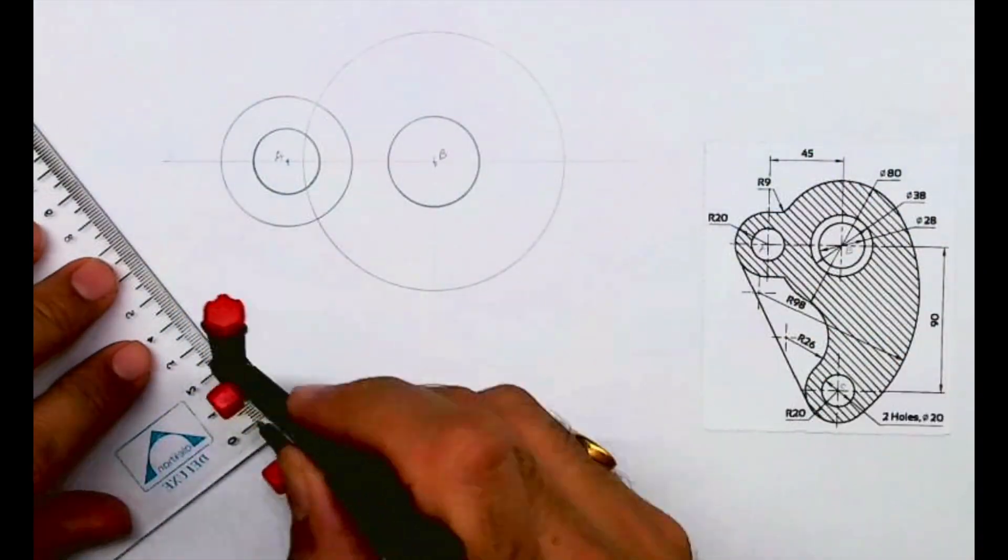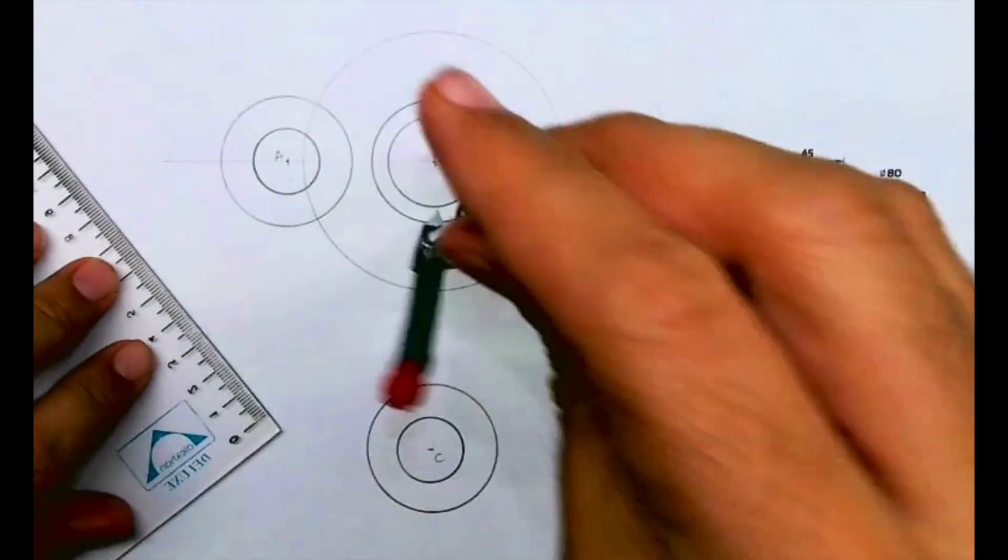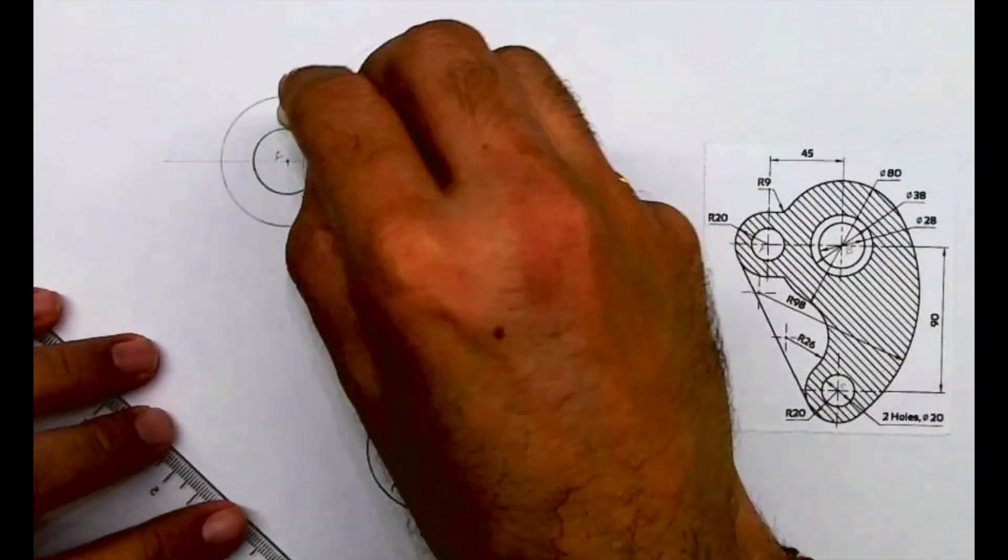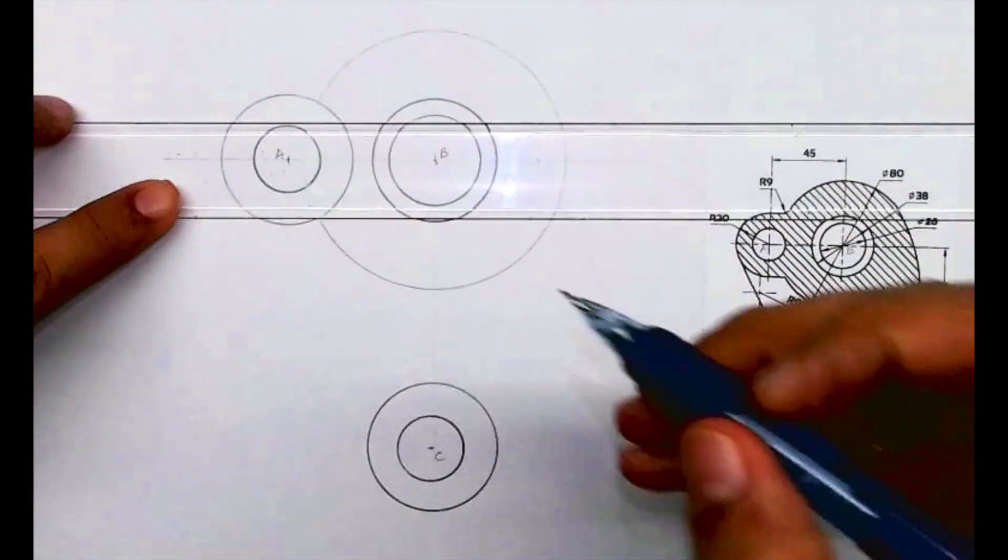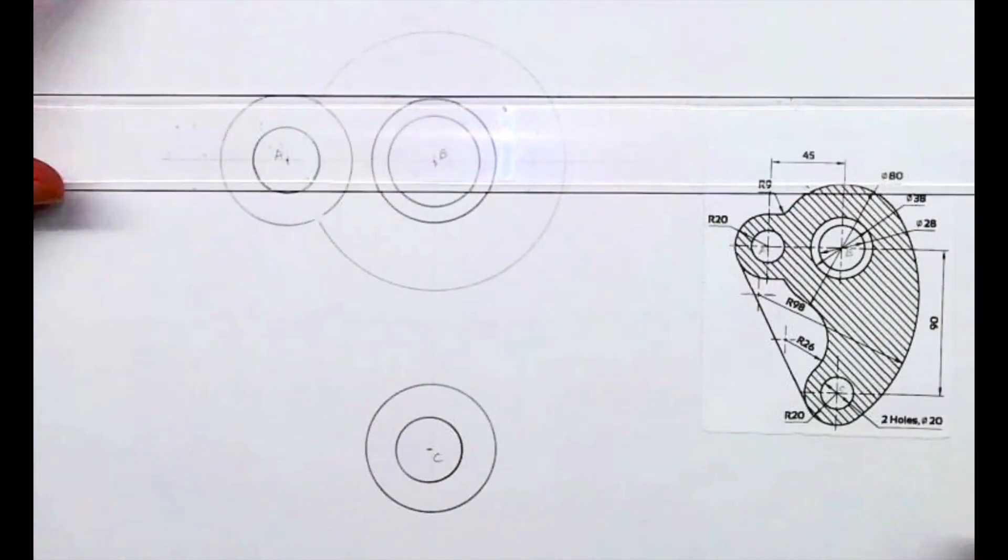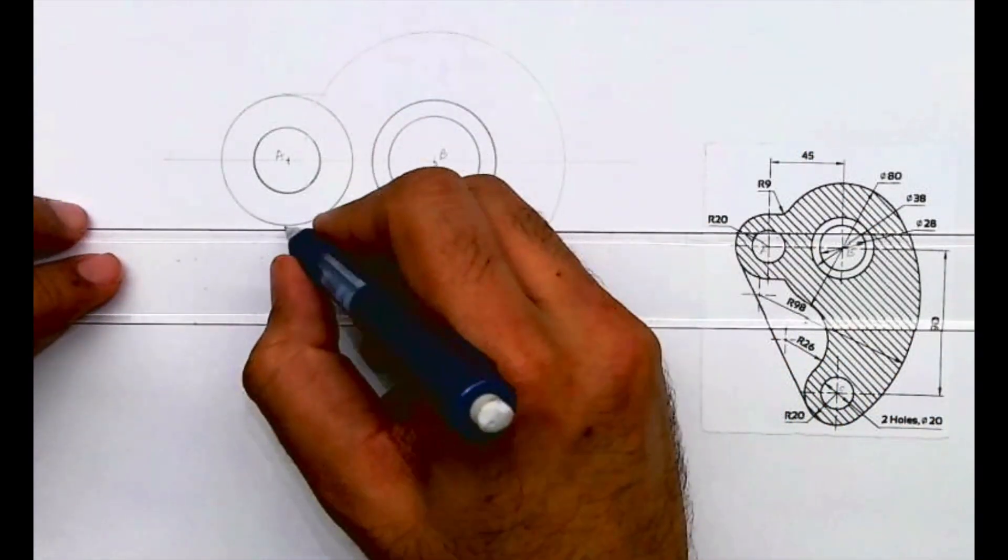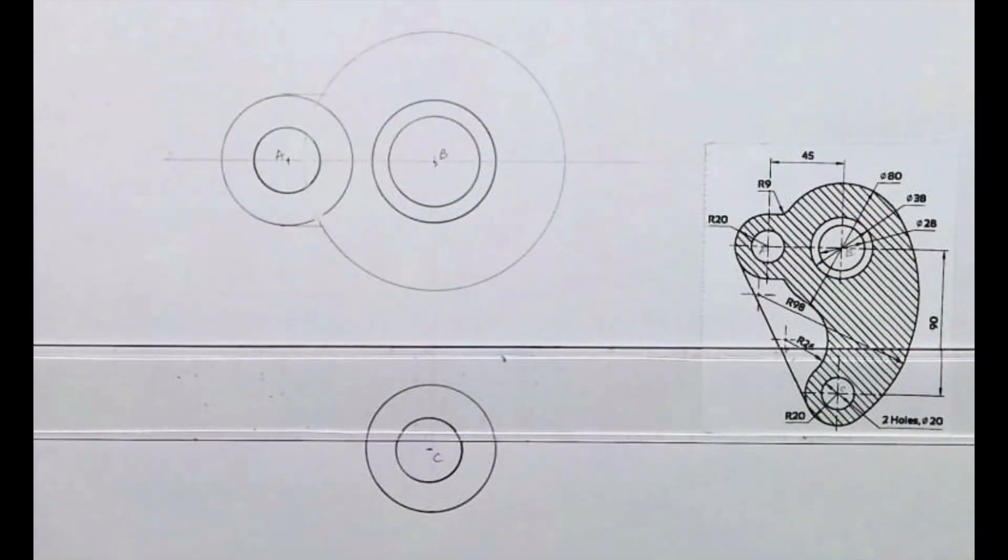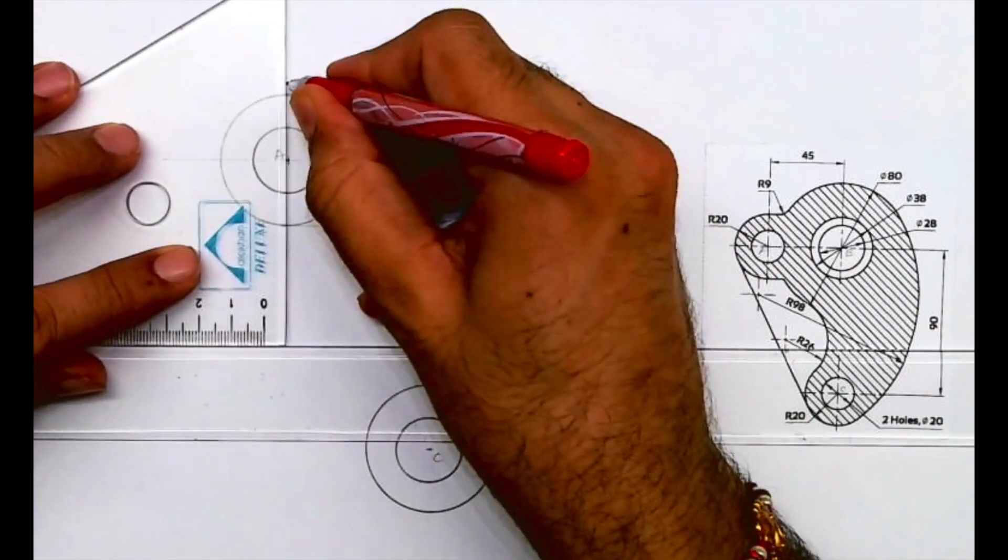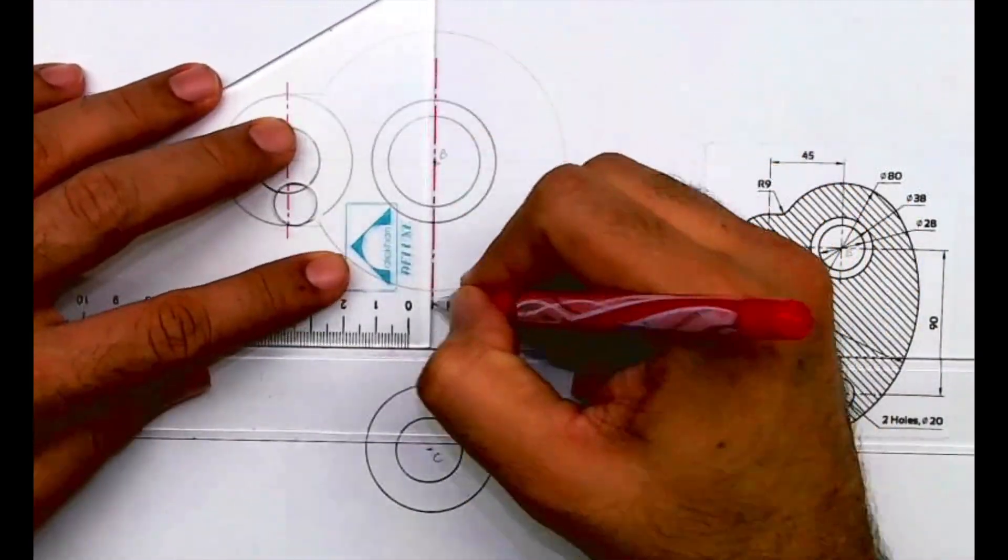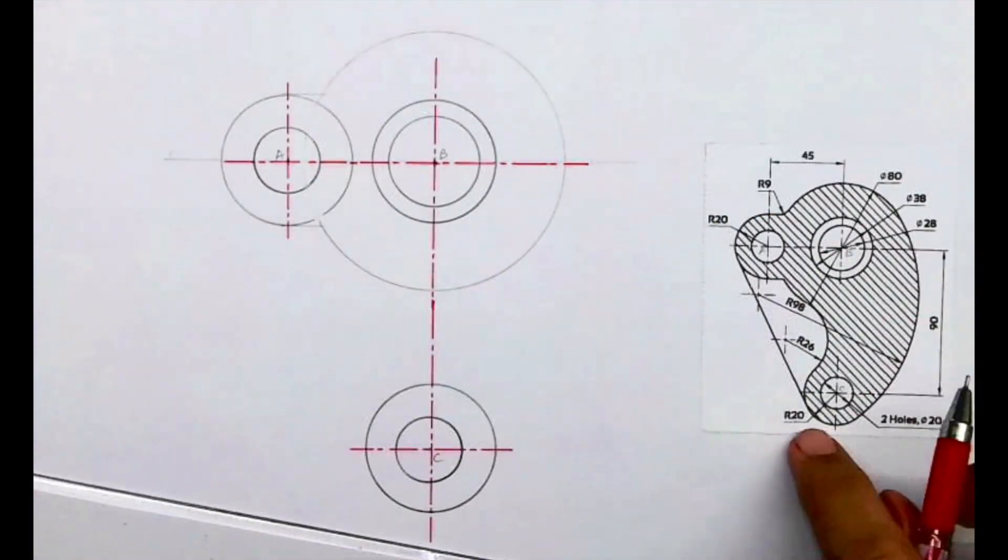Now what we will do now is draw a horizontal line from here. Now we draw axis line.